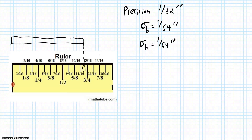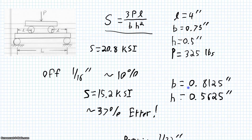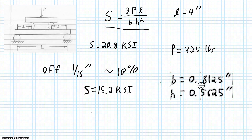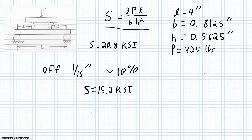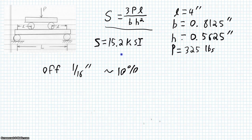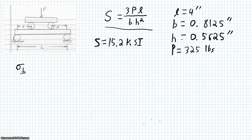Now the question is: how do these errors propagate through our equation to give us some level of confidence in our calculated yield stress value? Taking this example again, using the base and height measurements from a ruler accurate to 1/16 of an inch, the value for our ultimate strength is 15.2 ksi. We know we have an uncertainty in our base measurement of 1/64 of an inch, and we want to know how that propagates through to give us an uncertainty in our ultimate strength.